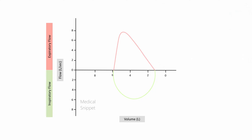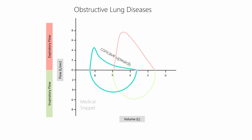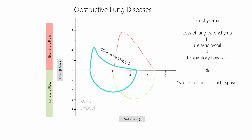In obstructive lung diseases like emphysema and asthma, the inspiratory curve is usually normal but there is a decrease in expiratory flow rate. The effort-independent part of the expiratory curve becomes concave upwards, as this part depends on elastic recoil and airway resistance. In emphysema, loss of lung parenchyma reduces elastic recoil, and secretions and bronchospasm increase airway resistance, both reducing expiratory flow rate and causing the concave upward shape.